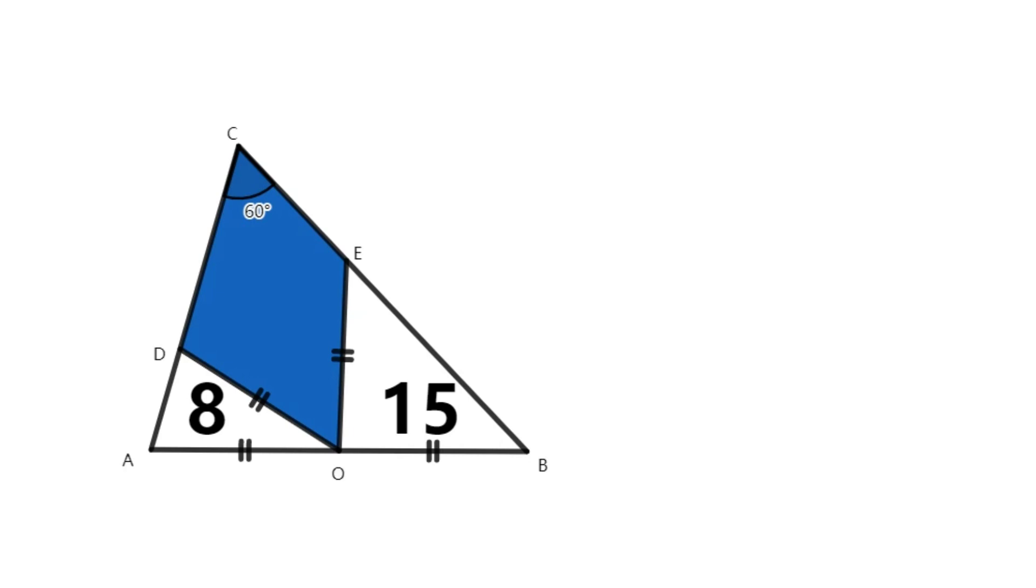In triangle ABC, angle ACB is equal to 60 degrees. O is the midpoint of the base AB, D on AC, E on BC.